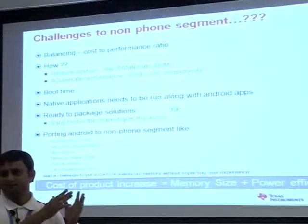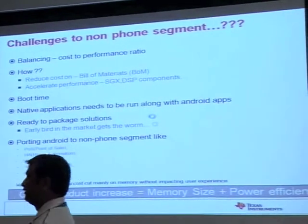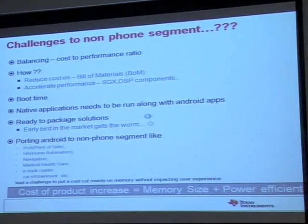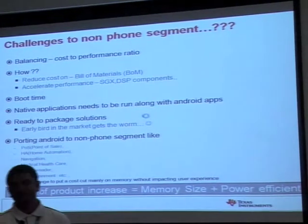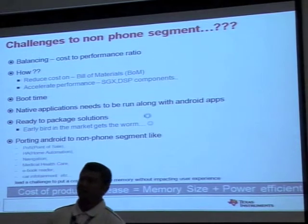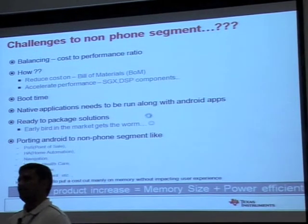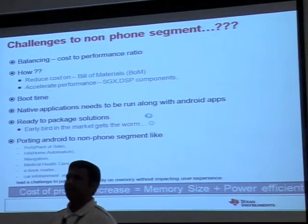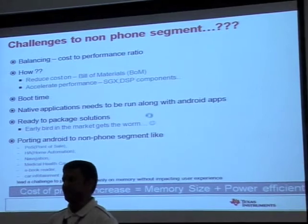What are the challenges when you take Android to the non-form segment? The very first challenge is the cost-to-performance ratio. When we talk about cost-to-performance ratios, two things come into features. One is bill of materials — within that we have memory, peripherals, processor speed, power transitions, etc. Performance: we need to optimize Android performance using inbuilt hardware capabilities, whether it's DSP, hardware-accelerated media, SGX graphics, everything.